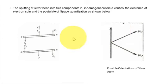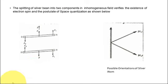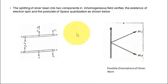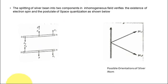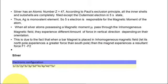This proves the spin of the electron. When silver atoms pass through an inhomogeneous magnetic field, they are split into two parts — the magnetic moment is split into two components. One is due to parallel spin and the other is due to anti-parallel spin. By this experiment, the concept of electron spin is verified. Let us go to the next slide.